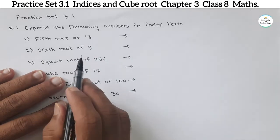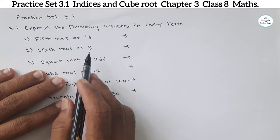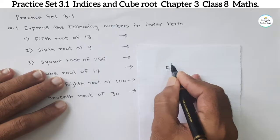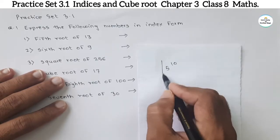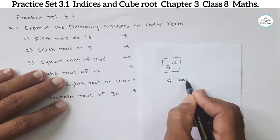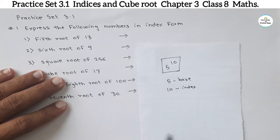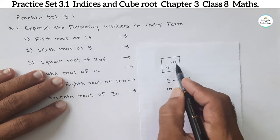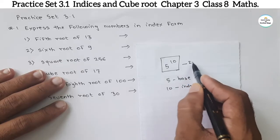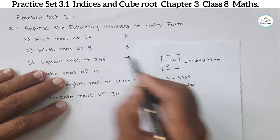Before solving these questions, first understand what index form is. If a number is written as 5 raised to 10, then this is the index form of that number. Here, 5 is the base and 10 is the index. So 5 raised to 10 means 5 is the base and 10 is the index — this is the index form of a number. This is the form that is asked here.